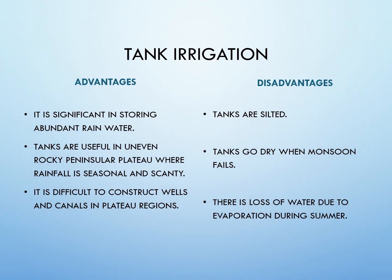Advantages of tank irrigation: it is useful for storing abundant rainwater; tanks are useful in uneven, rocky peninsular plateaus where rainfall is seasonal and scanty; it is difficult to construct wells and canals in plateau regions due to underlying hard rocks. Disadvantages: tanks may get silted; they may go dry when the monsoon fails; and there is loss of water due to evaporation during summer.